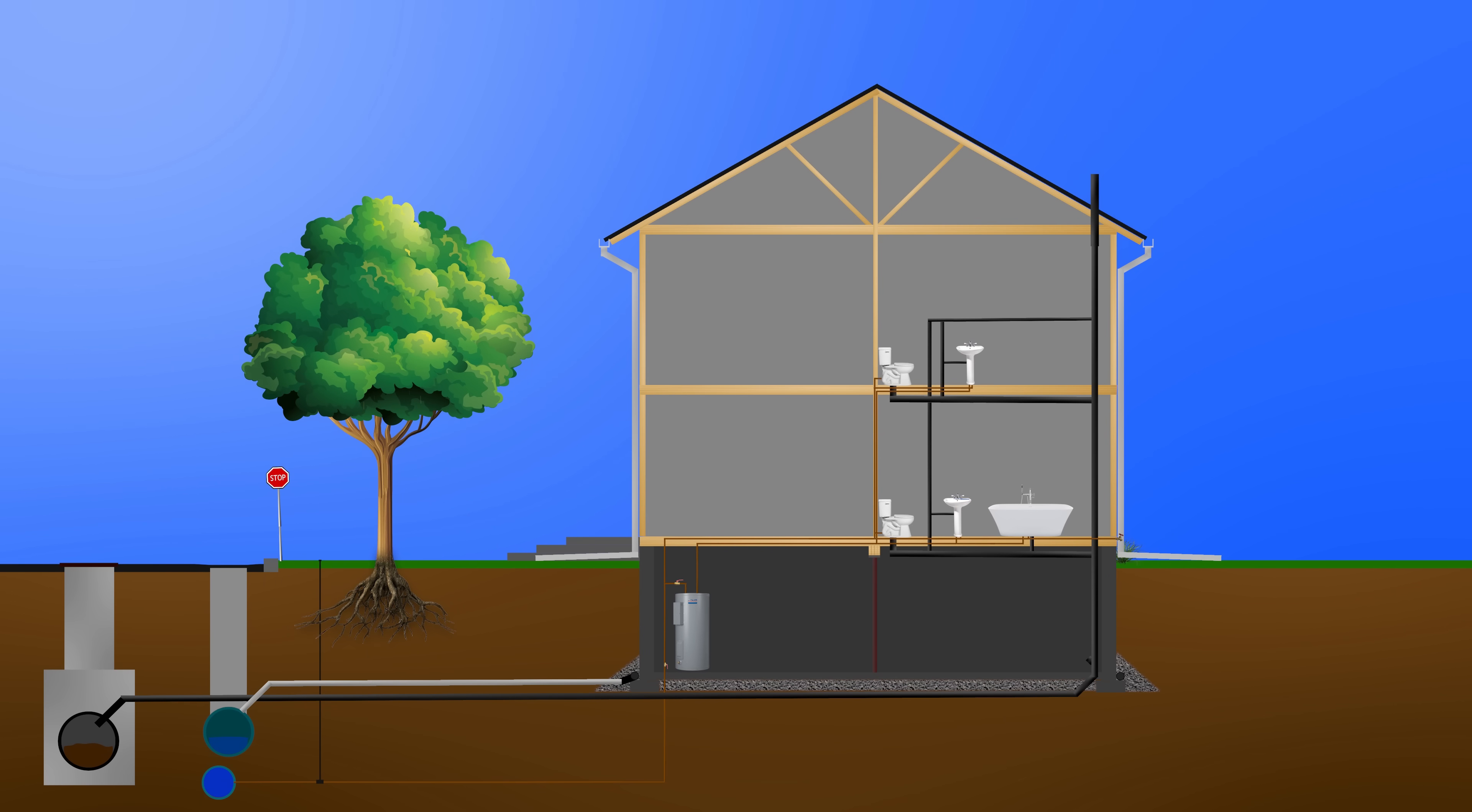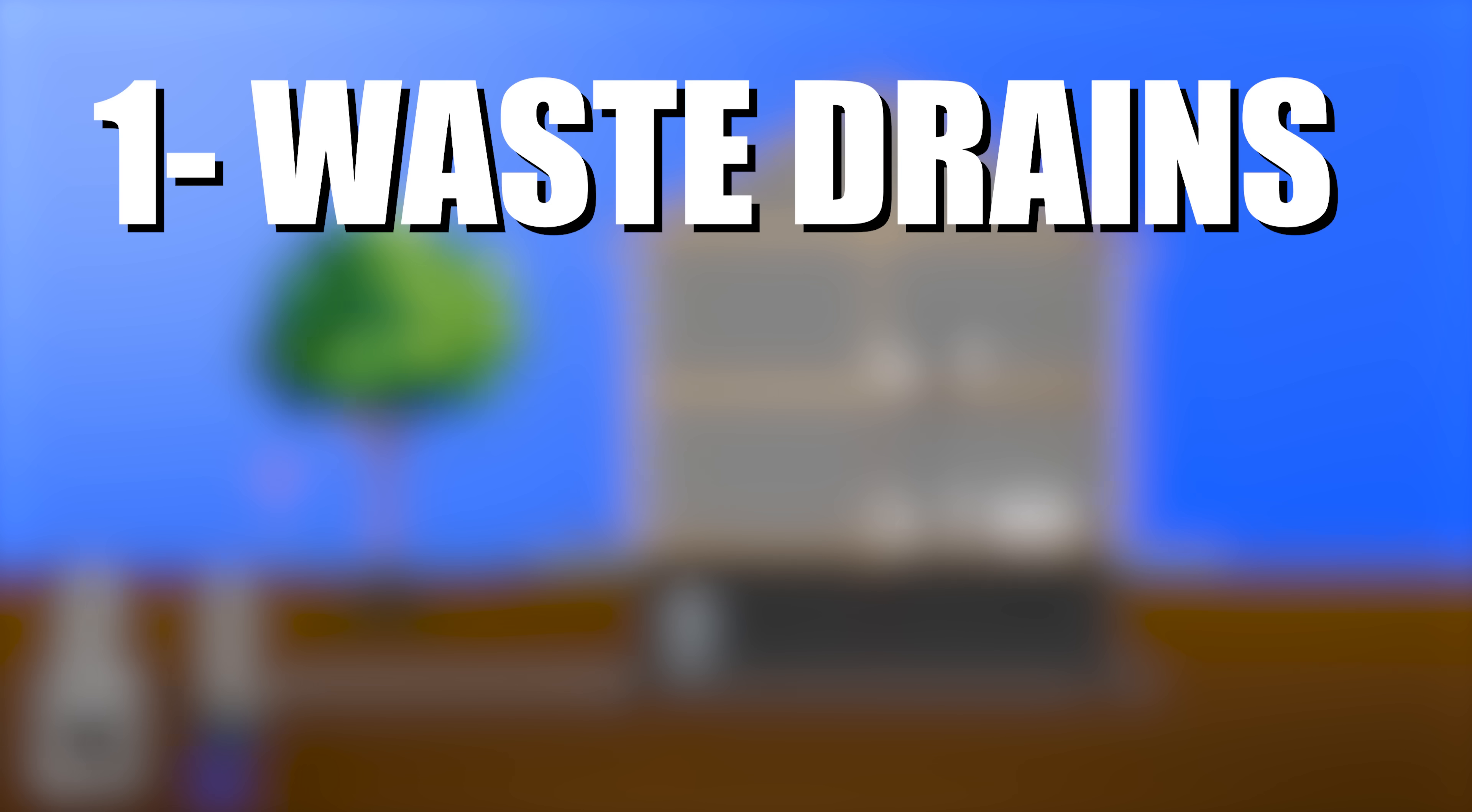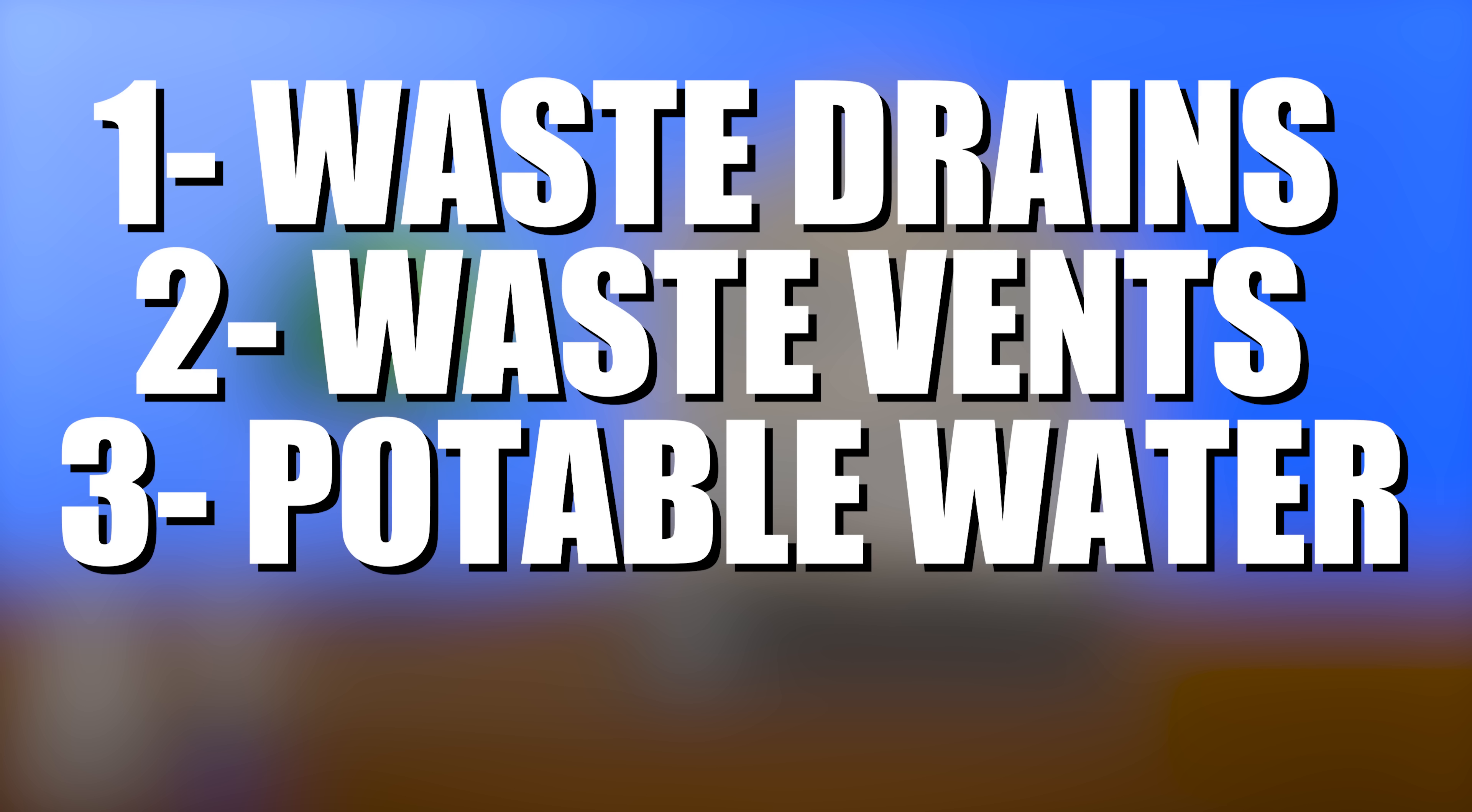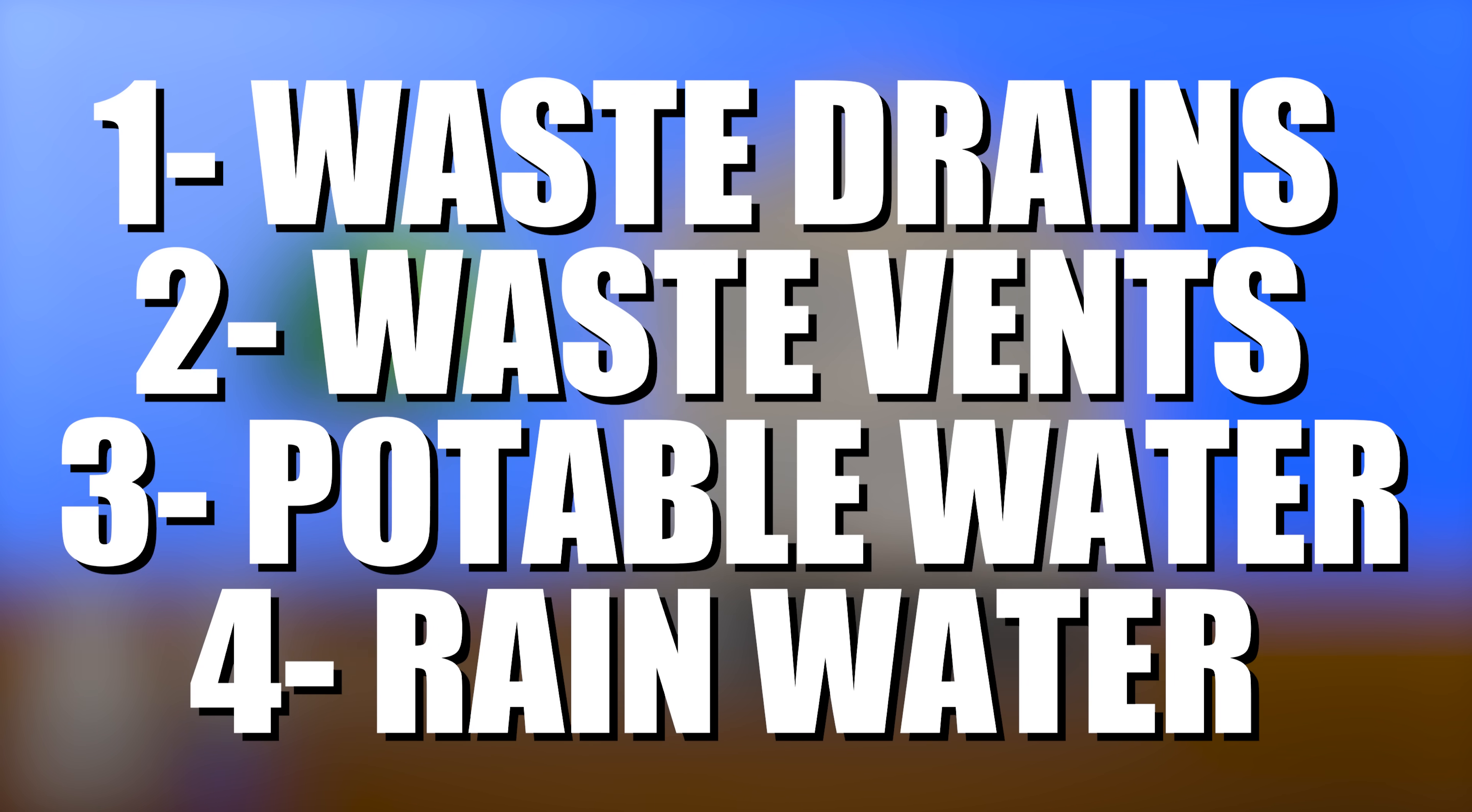A home's plumbing system is composed of four things: waste drains, waste vents, potable water, and rainwater management. So let's go through each process one by one and talk about what they do.